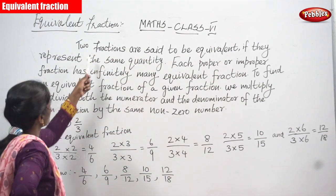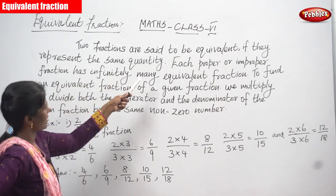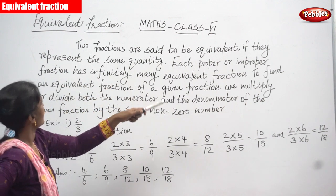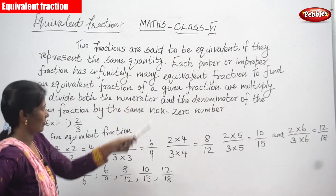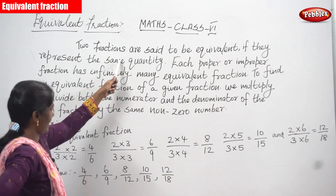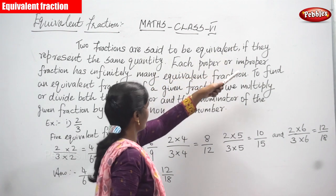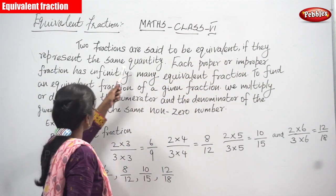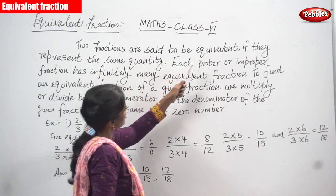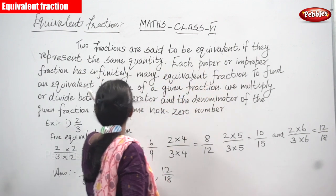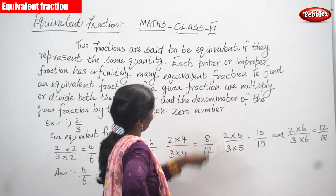Two fractions are said to be equivalent if they represent the same quantity. Each proper or improper fraction has infinitely many equivalent fractions.